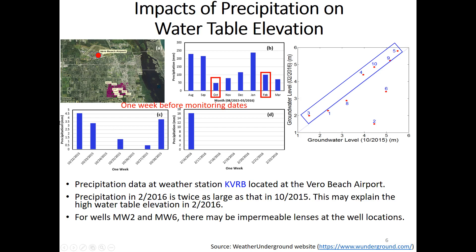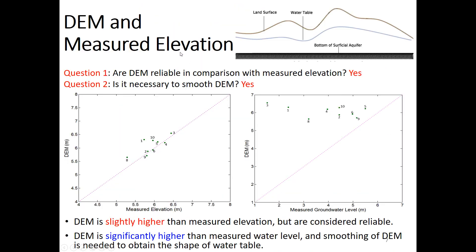Because of the higher rainfall and the shallow surficial aquifer, hydraulic heads in February are consistently higher than in October. For well two and well six, we think there may be an impermeable lens at those well locations affecting the measurements. Overall, we conclude that the hydraulic head data from October 2015 and February 2016 are similar to each other.